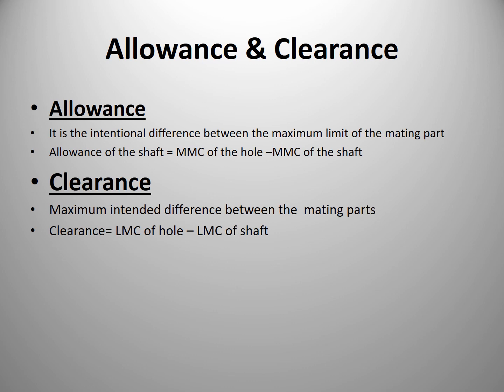The importance of LMC and MMC also involves two concepts: allowance and clearance. Allowance is the intentional difference between the maximum limits of mating parts — specifically, it is the MMC of the hole minus the MMC of the shaft. Clearance is the maximum possible difference between the mating parts, equal to the LMC of the hole minus the LMC of the shaft.